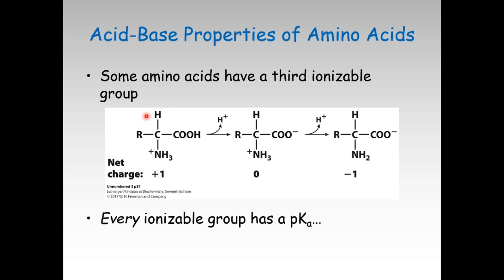At a pH of 1 or 2, the amino acid in solution has a net charge of +1. At a pH of 7, the carboxylic acid would have lost its proton and become COO−, so the net charge is zero because the negative charge equalizes the positive charge. If you increase the pH further to about 11 or 12, the amino group loses its proton and becomes neutral, and the molecule's charge becomes negative because of the negatively charged carboxylate. That's how amino acids have acid-base properties, and the ionizable groups can help alter the effective pH.